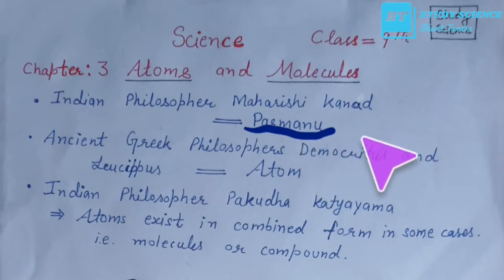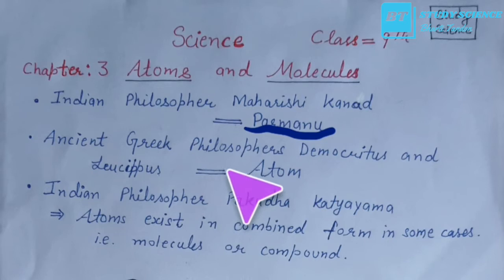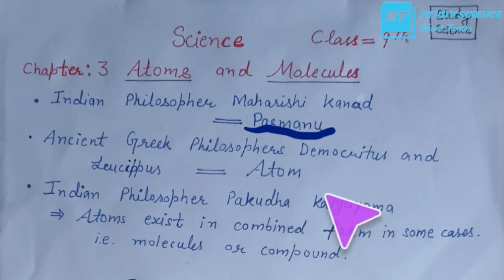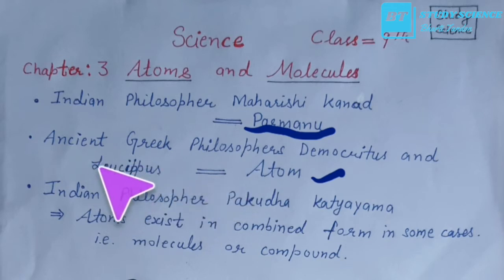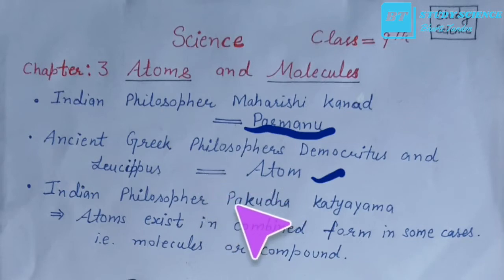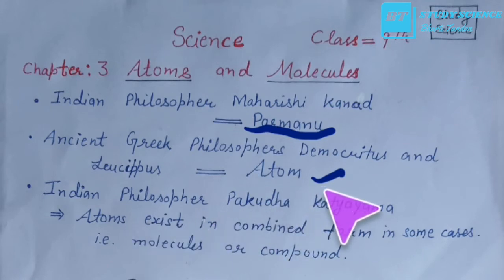These indivisible particles are called parmanu. Almost during the same period, ancient Greek philosophers Democritus and Leucippus put forward the same idea and called the smallest indivisible particles as atoms. इन particles को पर्मानू कहते हैं, और Greek philosophers Democrats and Leucippus ने भी यही idea दिया — matter divisible होता है और indivisible particles में टूटता है जिन्हें atoms कहा।